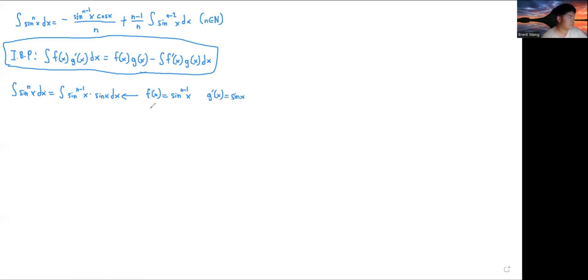That means the derivative of this, so f prime x by the power rule is n minus 1, sine to the n minus 2 x times cos x. And your g of x from here will just be equal to negative cos x.